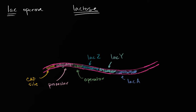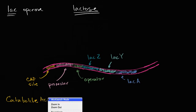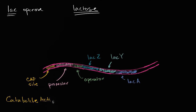Because it is an operon, we have a promoter where RNA polymerase would attach. I've also drawn the operator, where a repressor — specifically the lac repressor — could bind. And over here there is a CAP site, where CAP stands for Catabolite Activator Protein.